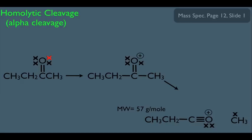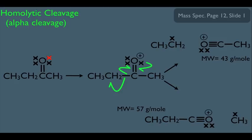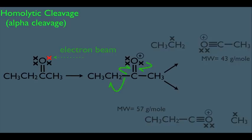But let's look at the other possibility here. We can get the same type of electron movement, but it'll be the bond on the left-hand side of the carbonyl carbon that cleaves. So if the electrons move this way, then we can expect these species as products. In this case, it's the fragment on the right that would be detected, so we should expect to see a peak at 43.